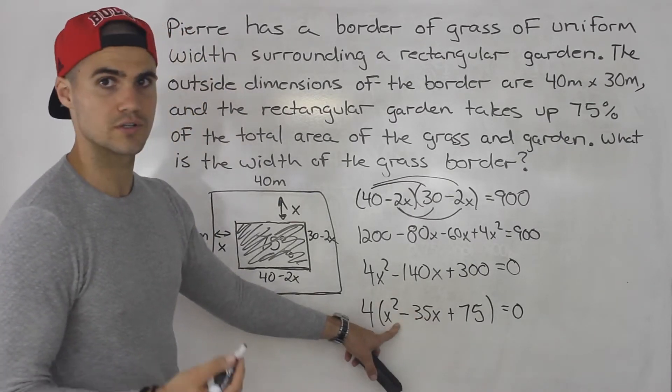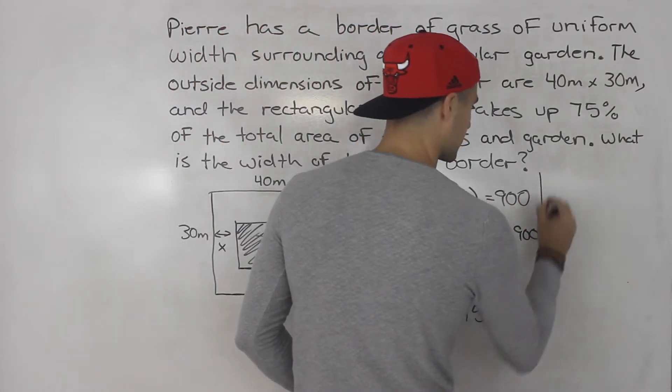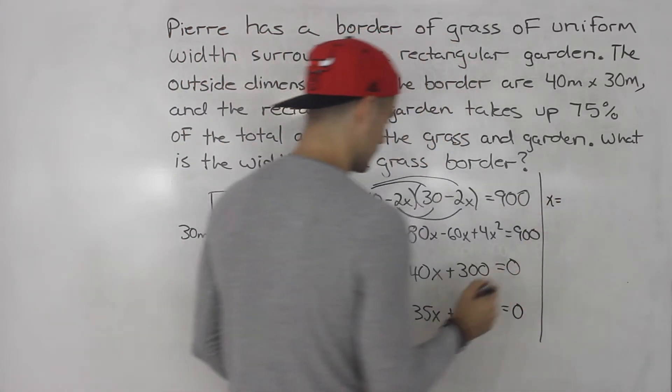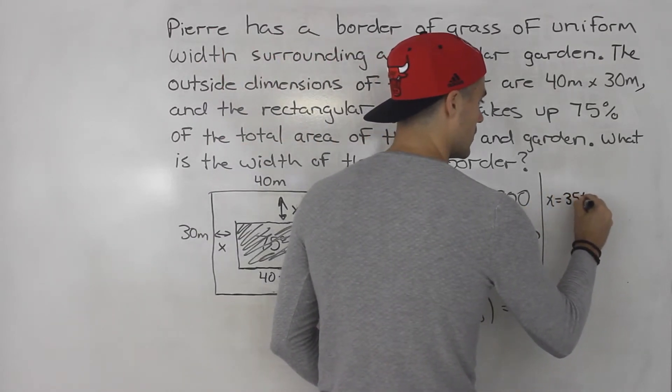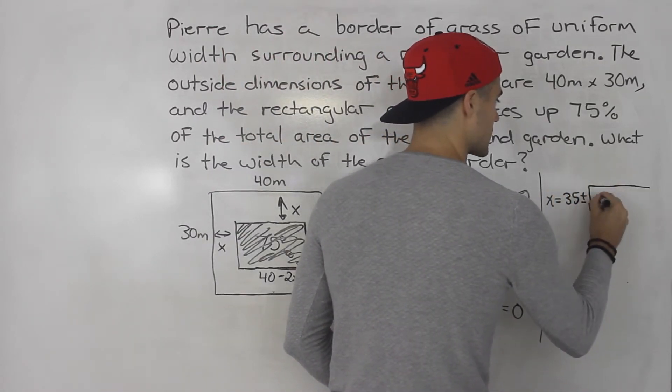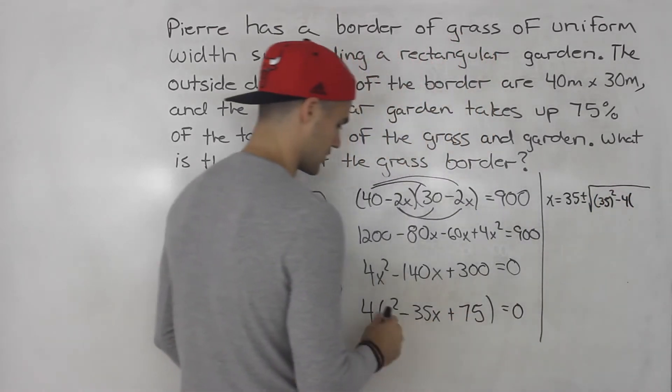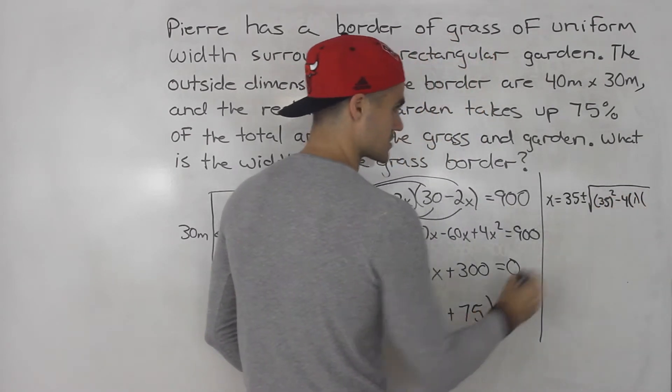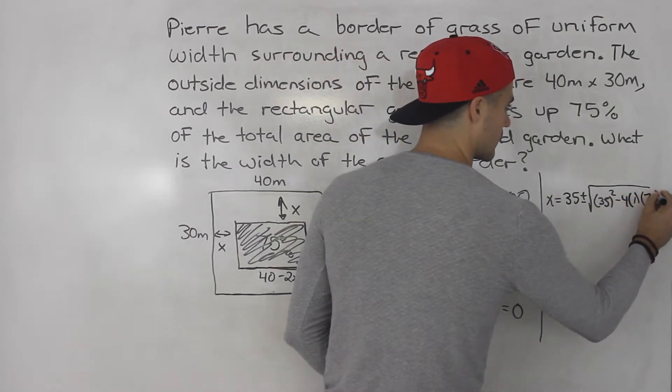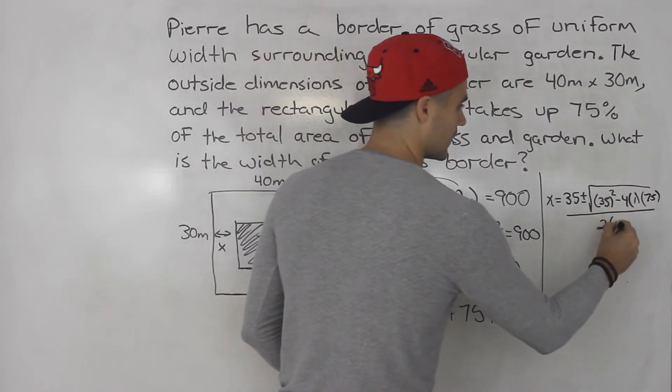So at this point I would just throw it into the quadratic formula. So we know x is going to equal negative b. So negative negative 35 which is positive 35 plus or minus b squared. So 35 squared minus 4 times the a value which is 1 here times the c value which is positive 75. And this is going to be all over 2 times the a value of 1.